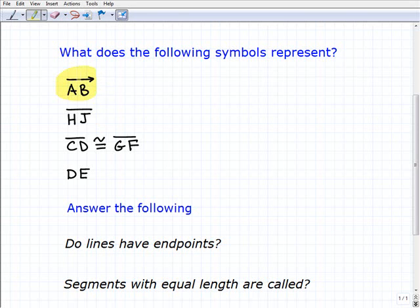So let's start with this one. What does this mean? All right, this is a ray. So this is ray AB. The endpoint is A. In other words, the ray is starting from point A and continuing on point B in this direction. So that's what that means. That's ray AB.